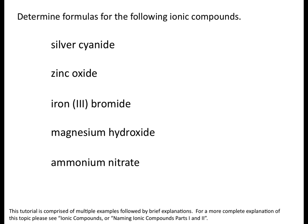Now for the last five examples. Silver cyanide: silver typically forms ions with a charge of plus one. Cyanide is one of the few polyatomic ions ending in -ide, so remember that cyanide is a polyatomic ion. Cyanide has the formula CN with a charge of minus one. Silver is plus one and cyanide is minus one, so the formula is AgCN.